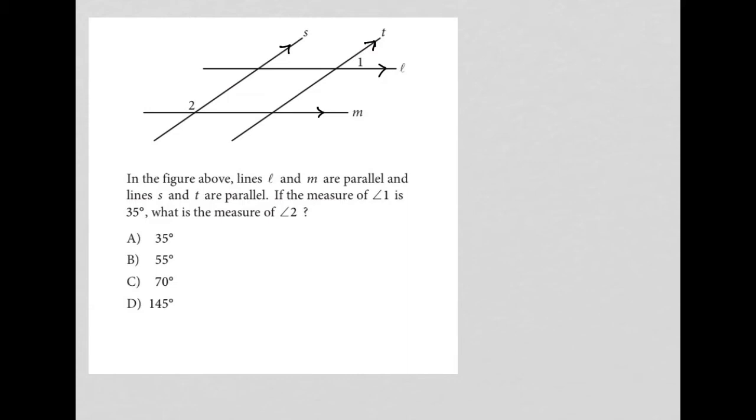Next, it says, if the measure of angle 1 is 35, so again, I'm going to put a little angle symbol here and put 35 degrees. What is the measure of angle 2? So then I'm going to put a question mark here.